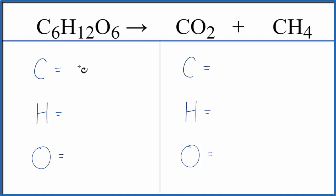We'll add the atoms up on both sides of the equation first. Six carbons, 12 hydrogens, and six oxygens. On the product side we have one carbon. Be careful because we have another here so we add those together. Two carbons. Hydrogens, four. Oxygens, two.